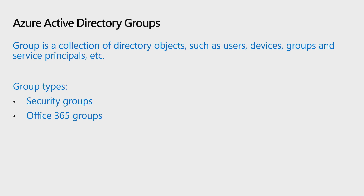On Azure Active Directory, customers can create and manage two types of groups: security groups and Office 365 groups. Security groups are used to control user access to resources. Azure AD helps you give access to your organization's resources by providing access rights to a single user or to an entire Azure AD group. Using groups allows the resource owner to assign access permissions to all the members of the group, instead of having to provide the rights one by one. Security groups can have users and other object types as members.